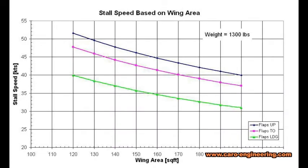This chart shows stall speeds. The wing area is usually selected to get a certain stall speed, and I made this chart to illustrate this. Basically, the larger the wing area, the slower the stall speed. This relationship is pretty straightforward — if everything else remains the same, the stall speed is only a function of the wing area. There are some other factors, but their influence is fairly small, so I'm going to neglect them here to keep it simple.